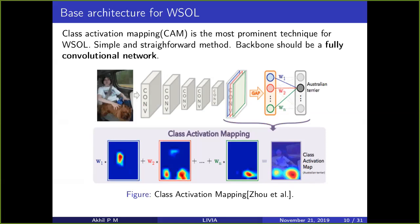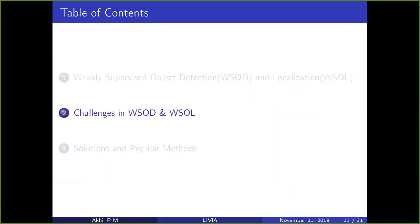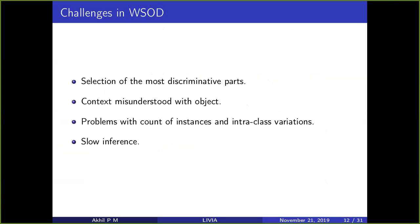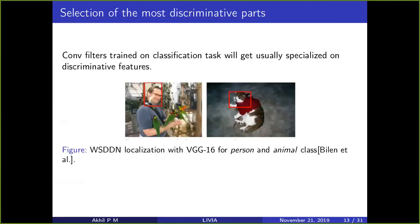This approach works from a fully convolutional network with global average pooling and a fully connected layer. Looking at the challenges when addressing this problem with image-level labels, there are several issues: selection of the most discriminative areas, context misunderstanding as object, the problem with count of instances, and several other things. The first challenge is about the selection of the most discriminative areas.